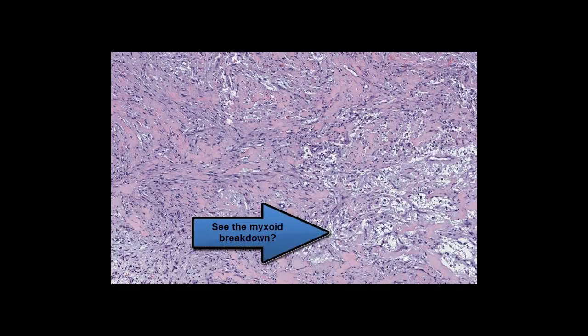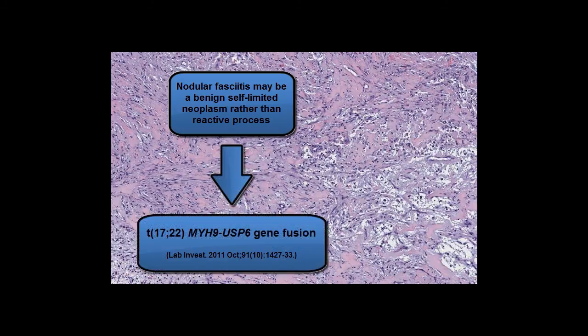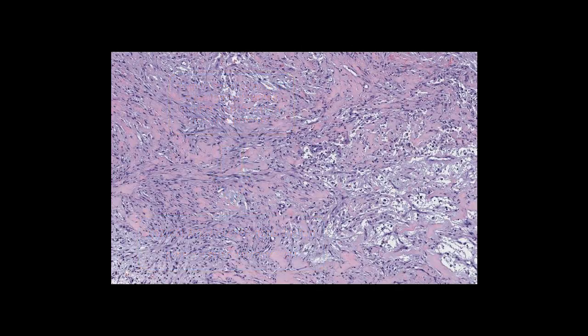Historically, nodular fasciitis has been regarded as a reactive proliferation of myofibroblasts, but more recent data has suggested that these proliferations may actually be transient self-limited neoplasms. A 2011 study identified the presence of translocation 17;22, resulting in a fusion of the USP6 gene to the MYH9 gene, discovered in the majority of nodular fasciitis cases tested. This interesting finding suggests that this may actually be a transient neoplasm of myofibroblasts rather than a reactive proliferation, as had been thought for so many years.